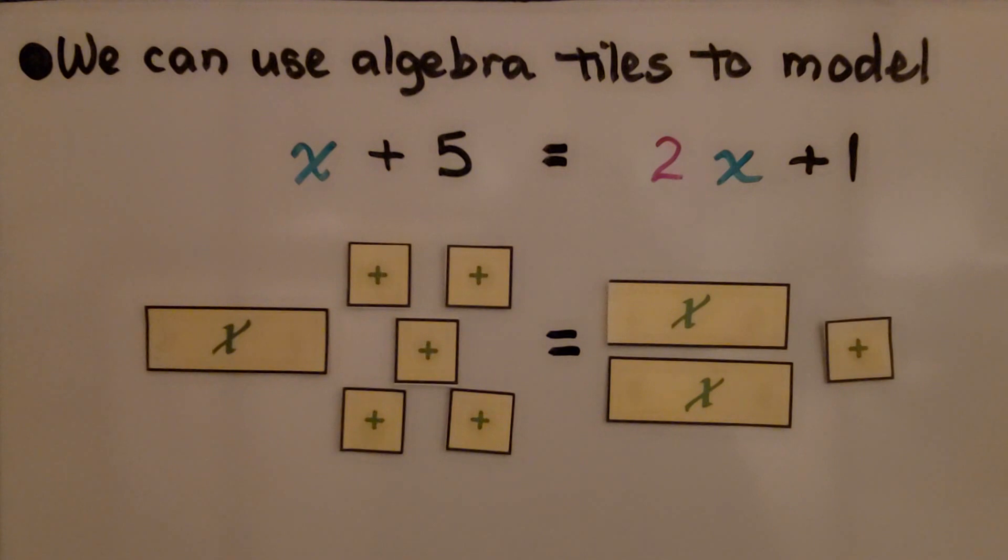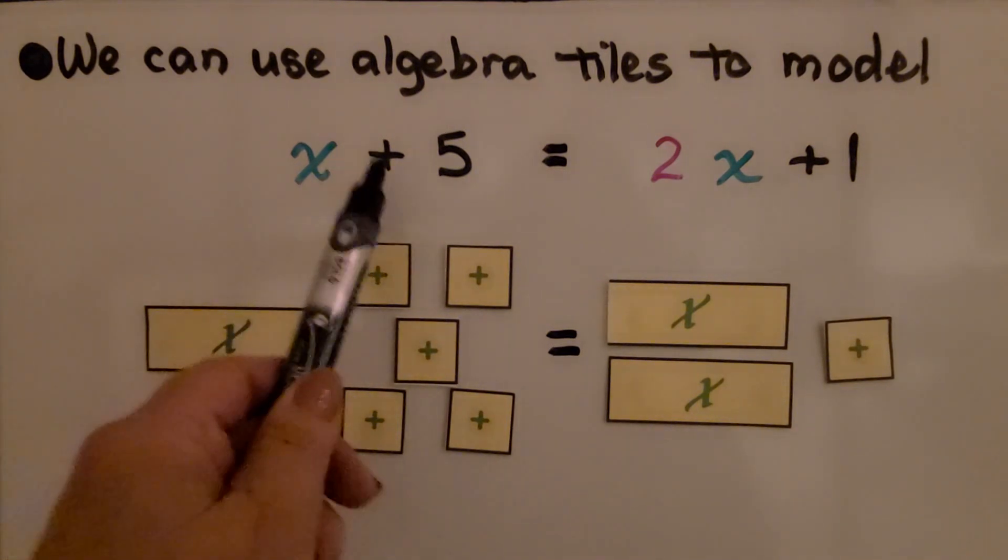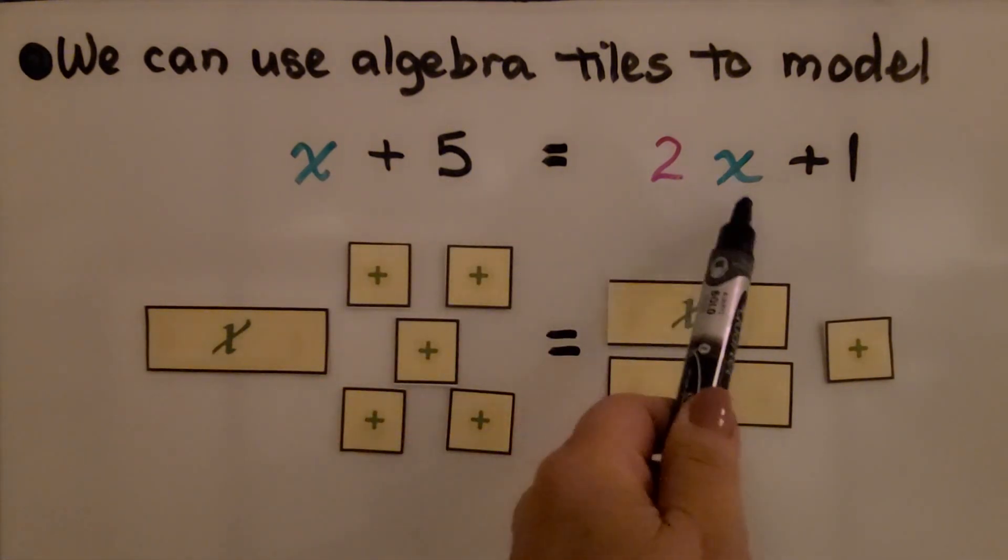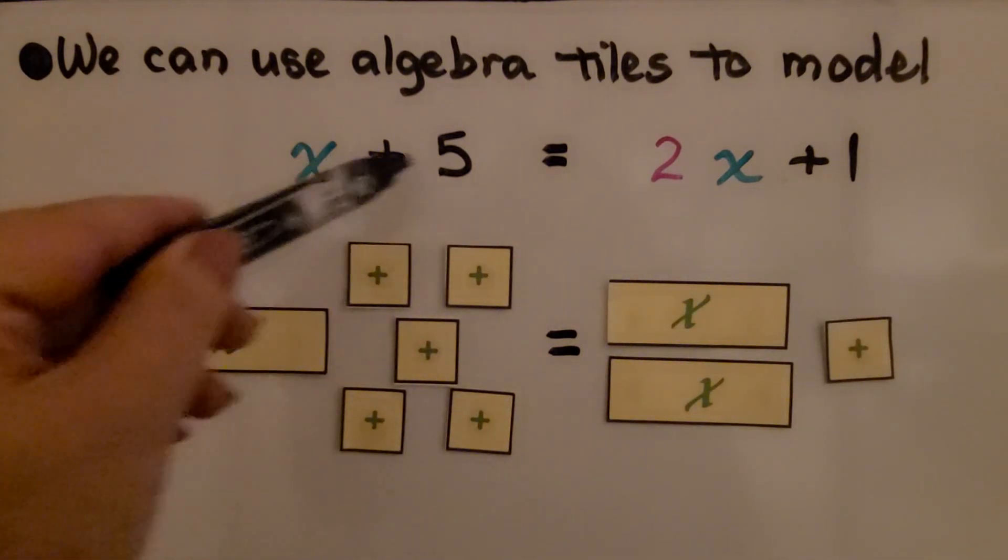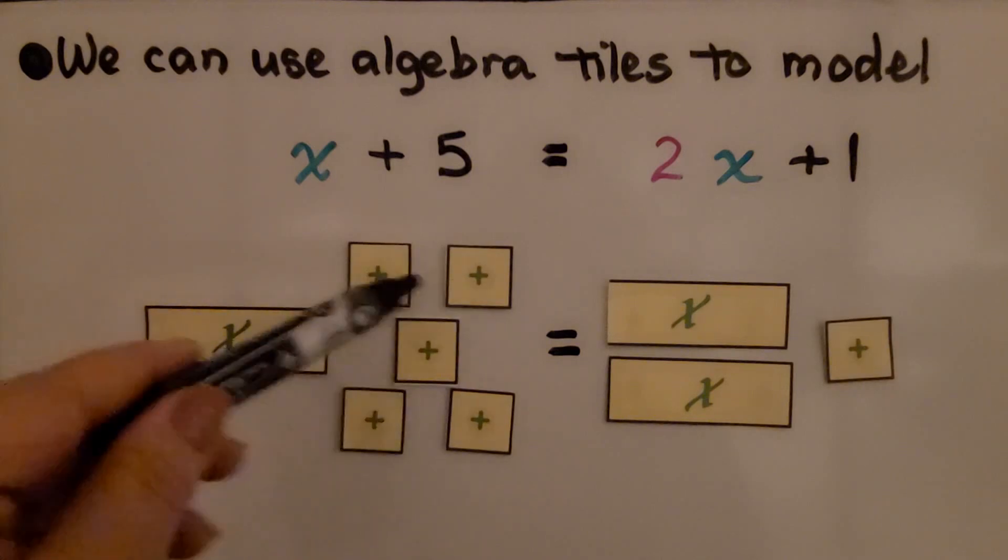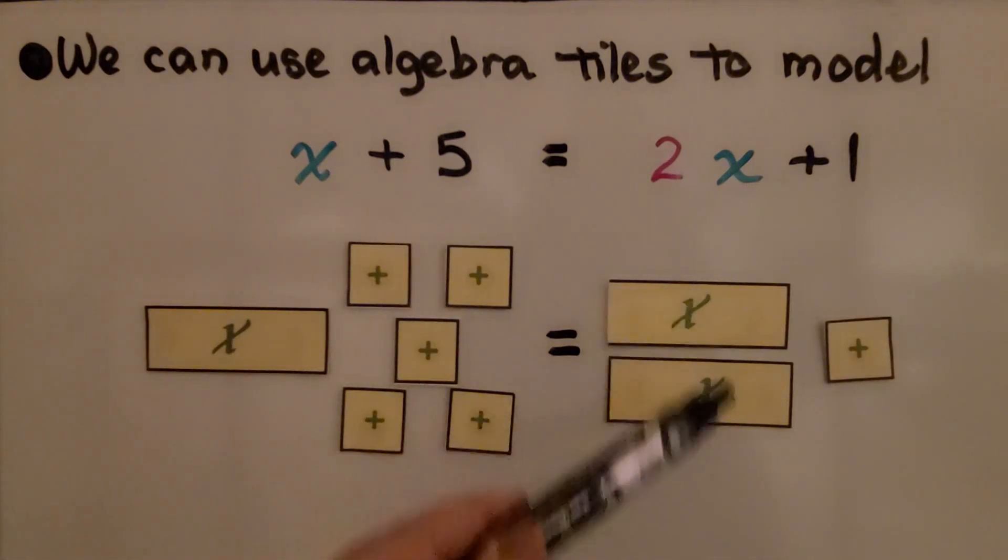We can use algebra tiles to model x plus 5 equals 2x plus 1. We've got x plus 5, we have 5 single tiles. Then we have 2x and 1 single tile.